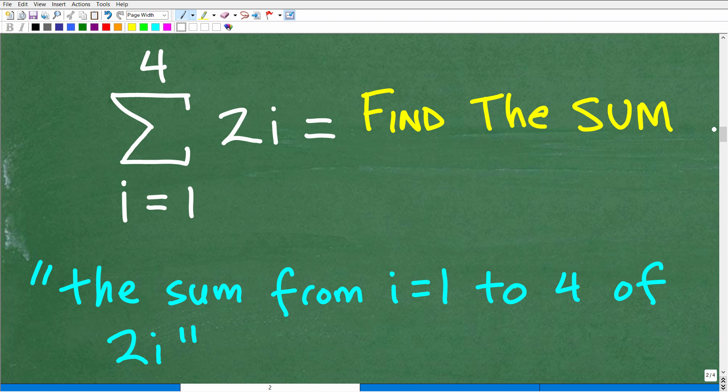OK, so again, the sigma notation, this notation right here is a great way to express a series. OK, and the series is the sum. Right. We're adding up the terms of a sequence. OK, that is a series. Now, just to kind of understand how you would say this, how you would describe this, you would say this as the sum from i equals one to four. OK, of 2i. All right. So that's how you would describe this.